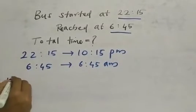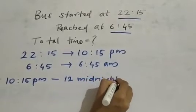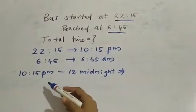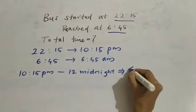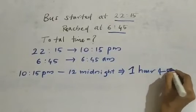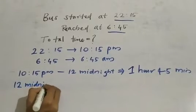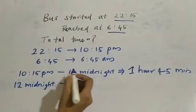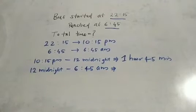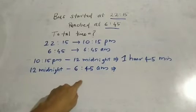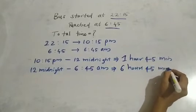From 10:15 PM to 12 midnight — how many hours? 10:15 to 11 is 45 minutes; 11 to 12 is 1 hour. So 1 hour 45 minutes. Now from 12 midnight to 6:45 AM — how many hours? From 12 to 6 is 6 hours, and 45 minutes. So 6 hours and 45 minutes in total.